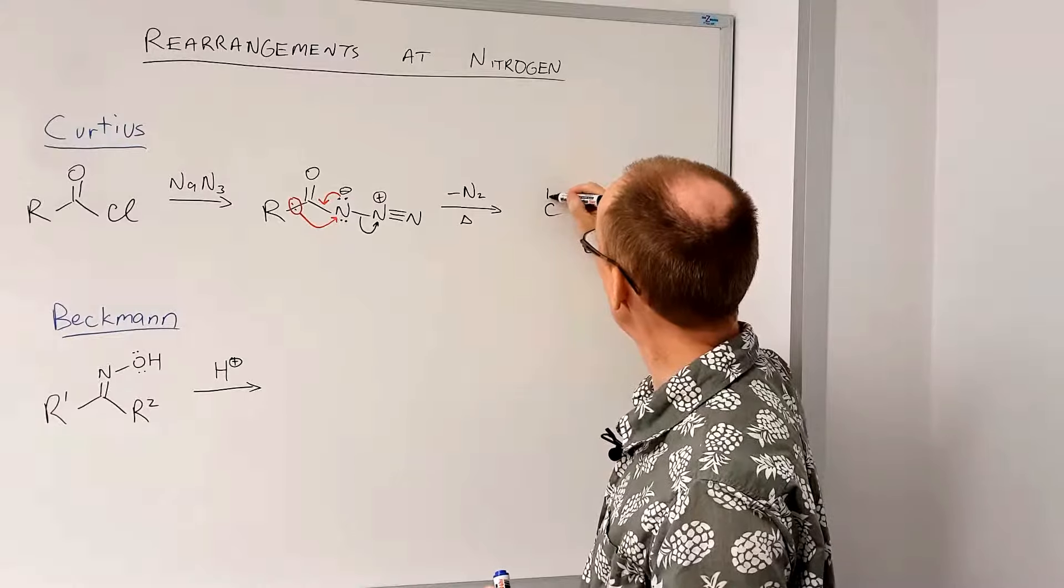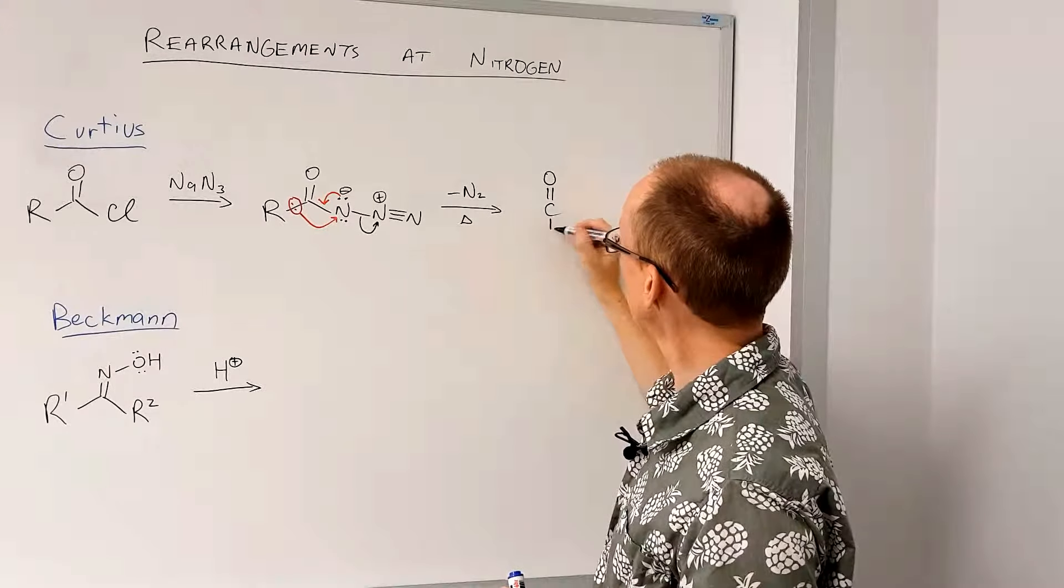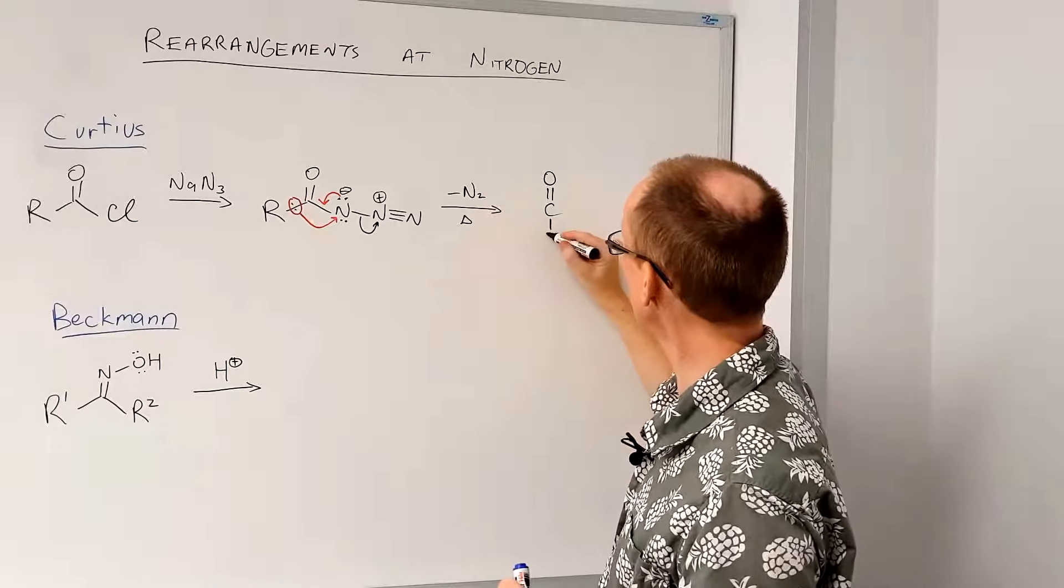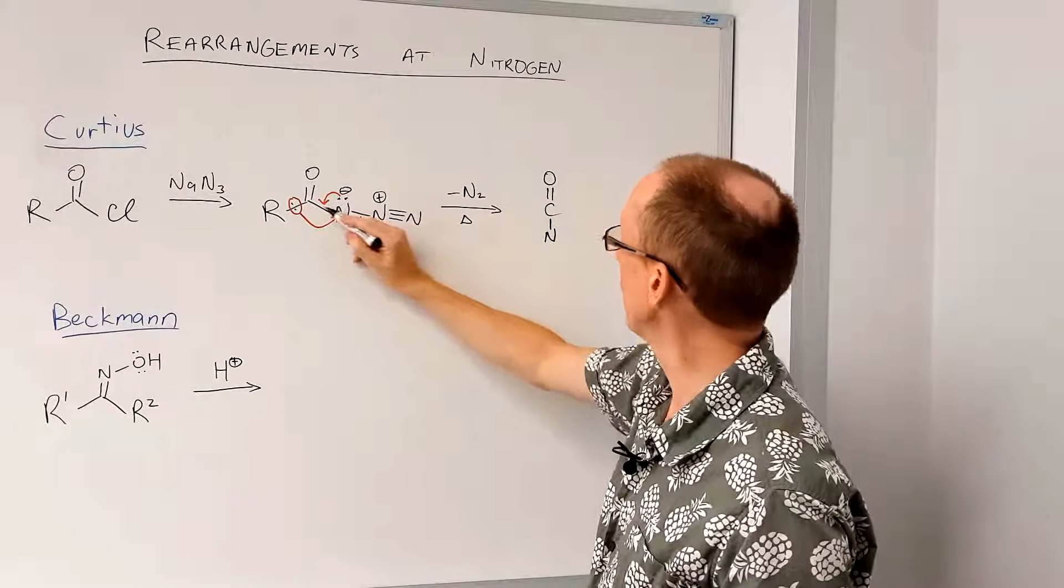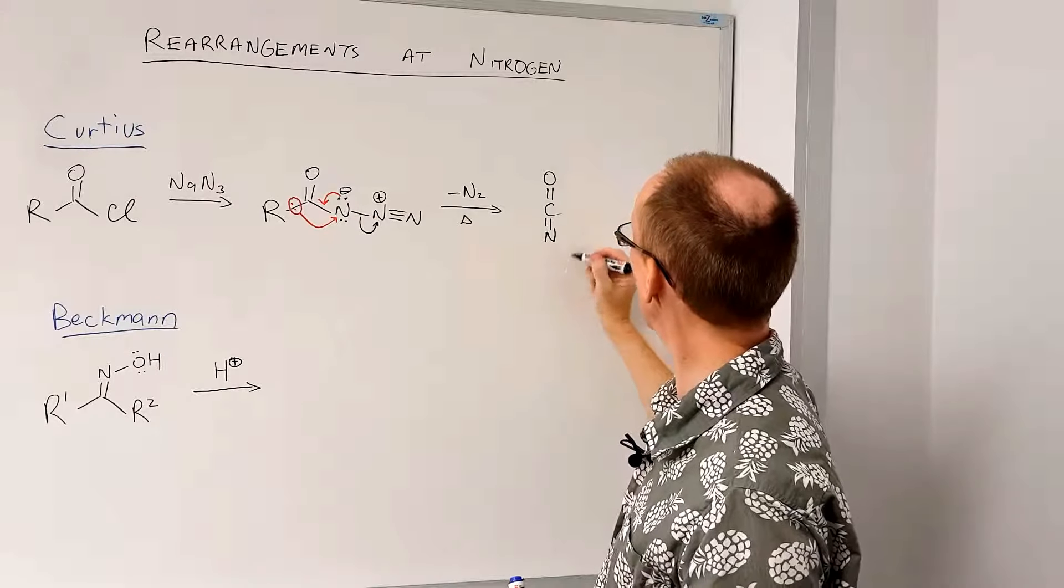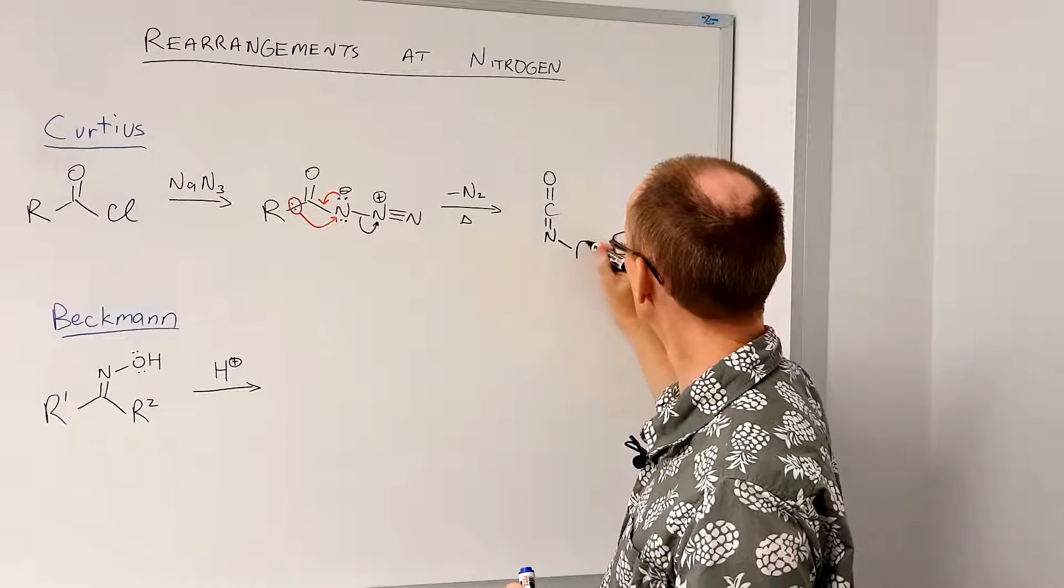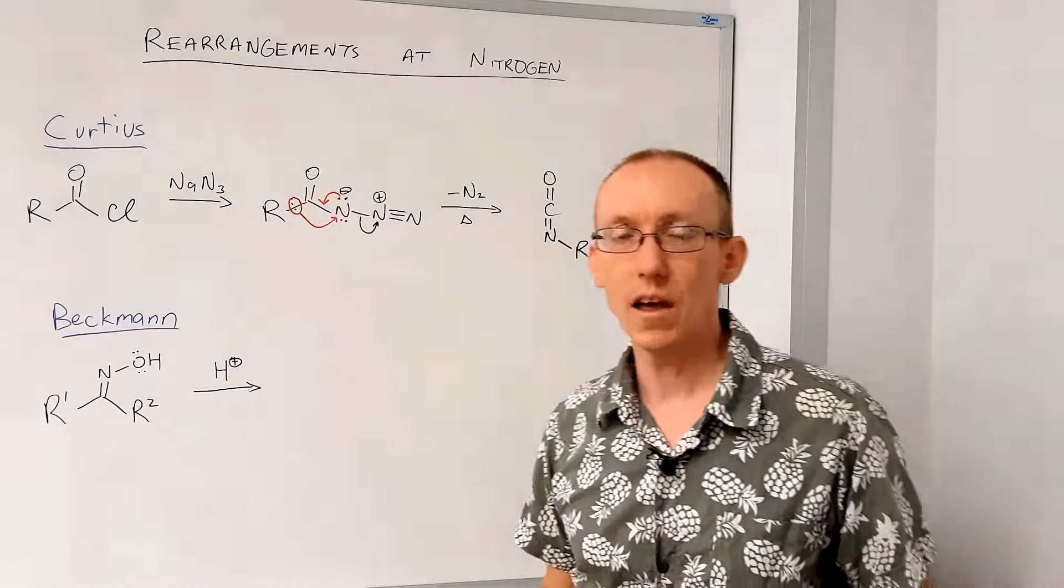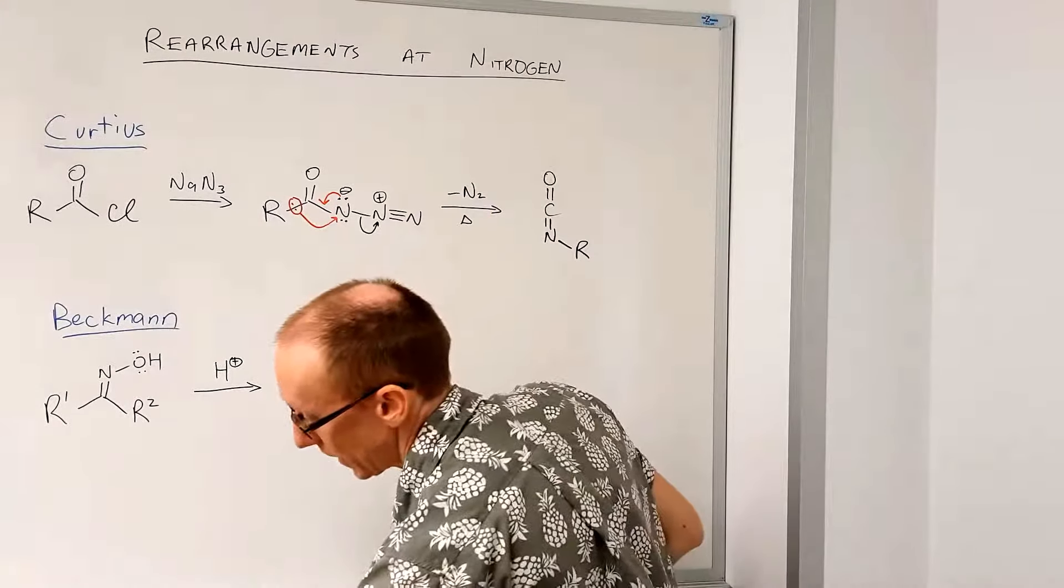okay, so that carbon atom that is bonded to that oxygen also has this nitrogen attached to it. That nitrogen is now doubly bonded to that carbon. And then we have this R group attached to that nitrogen now. Okay, so we have that rather unusual structure, but they're quite well known. It's called an isocyanate.